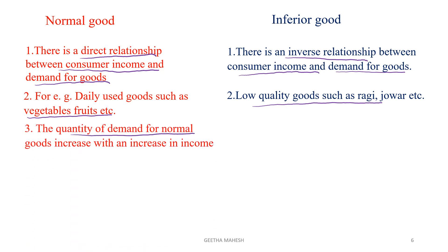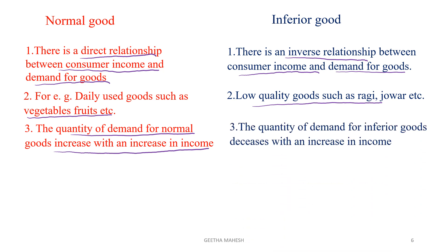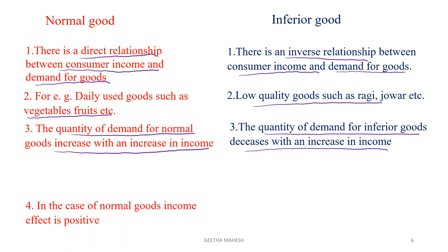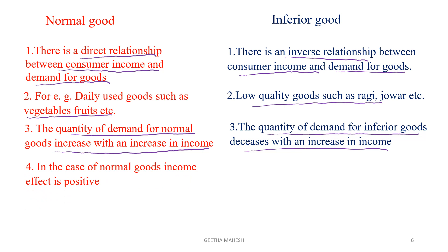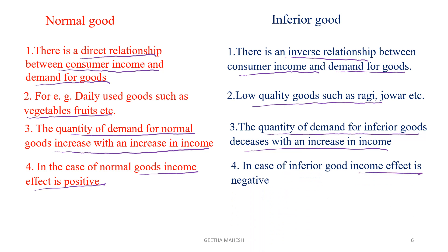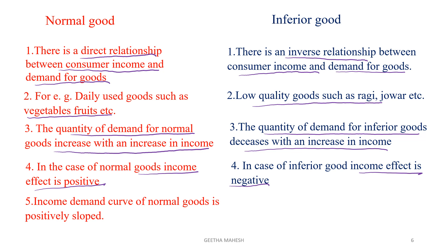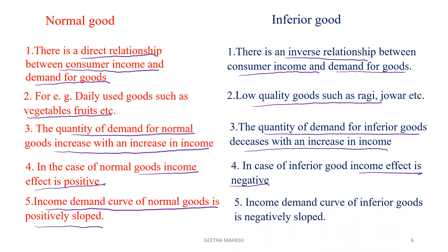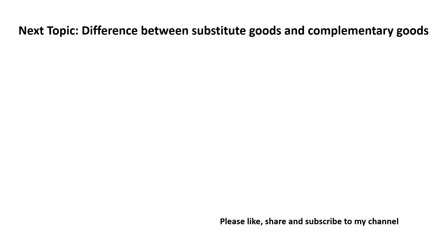Quantity demanded for normal goods increases with an increase in income of a consumer, whereas quantity demanded for inferior goods decreases with an increase in income of a consumer. In case of normal goods the income effect is positive; in case of inferior goods the income effect is negative. The income demand curve for normal goods is positively sloped and the income demand curve for inferior goods is negatively sloped.